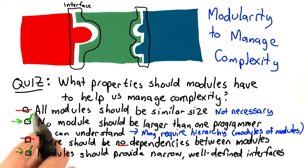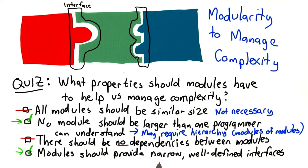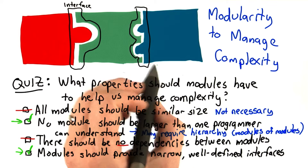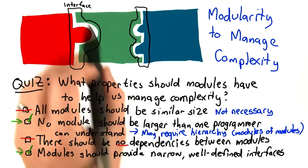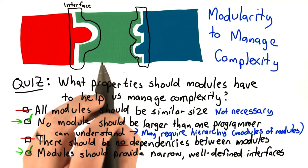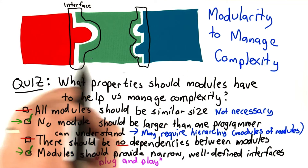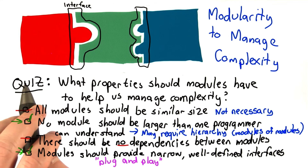And that's going to be one of the main things we focus on in this lesson. One of the advantages of having narrow, well-defined interfaces is we can separate the implementation from the use of the module. If we have some other way of implementing this piece, we could still plug it in, and we wouldn't need to change the green piece at all. That's one of our goals of modular design — to be able to plug in different modules without having to reconsider the whole system.